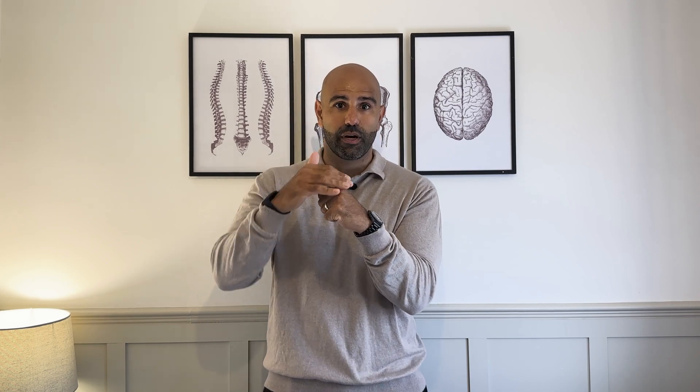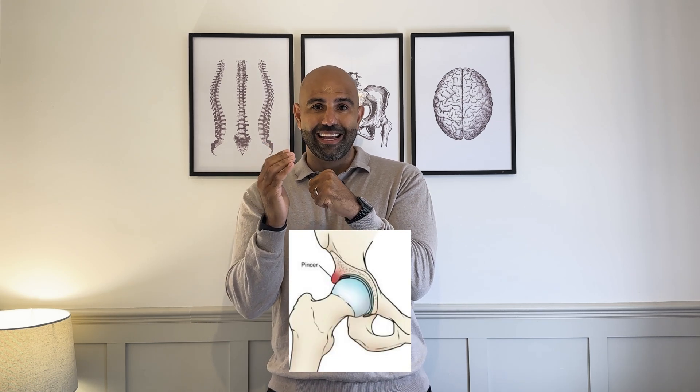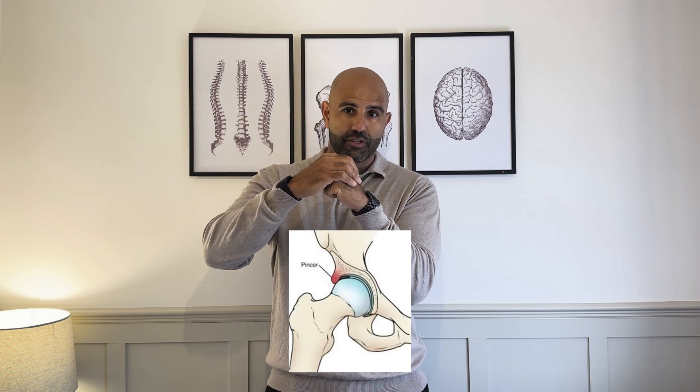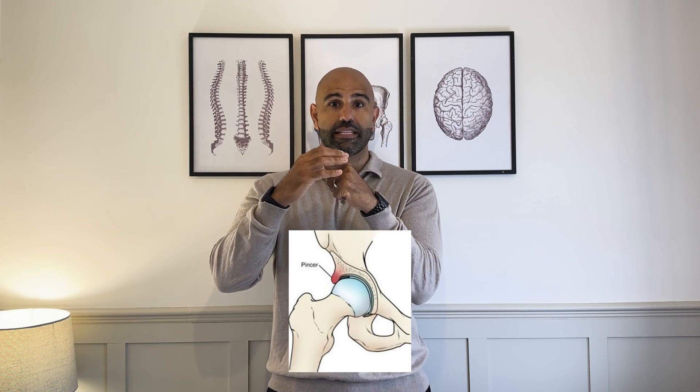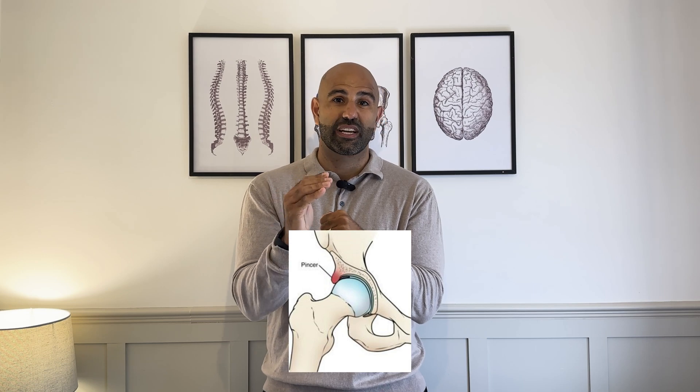The cam is on the ball part. The pincer — another type of impingement — is if there's too much over-coverage. That could be if you have a deeper socket, or the position of the socket is slightly tilted, meaning you get a slight excess coverage.